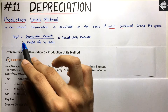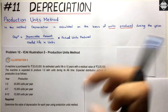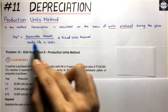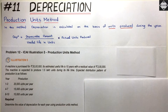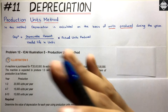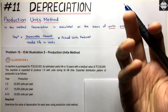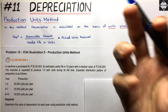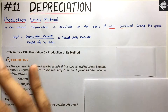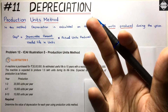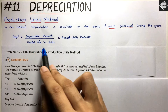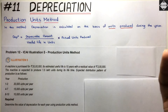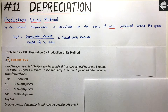You will calculate depreciation by taking the depreciable amount and dividing it by the useful life in units. The depreciable amount is the maximum depreciation you can charge — it is cost minus residual value. The formula is the same as the Straight Line Method, only units are taken into consideration instead of years.